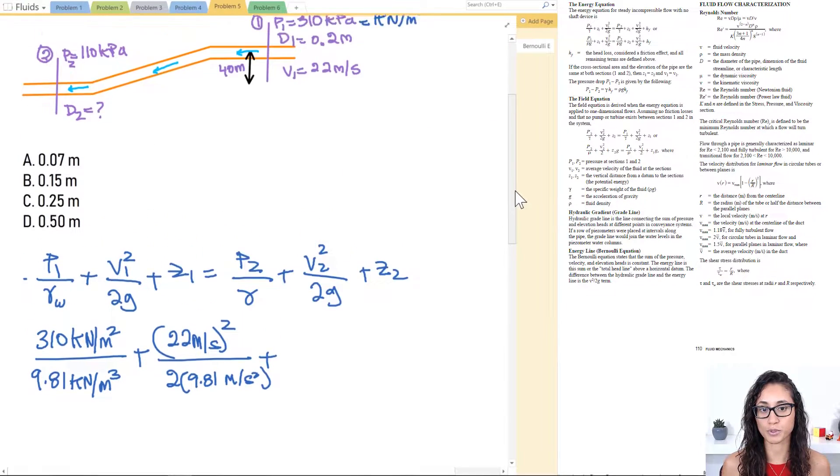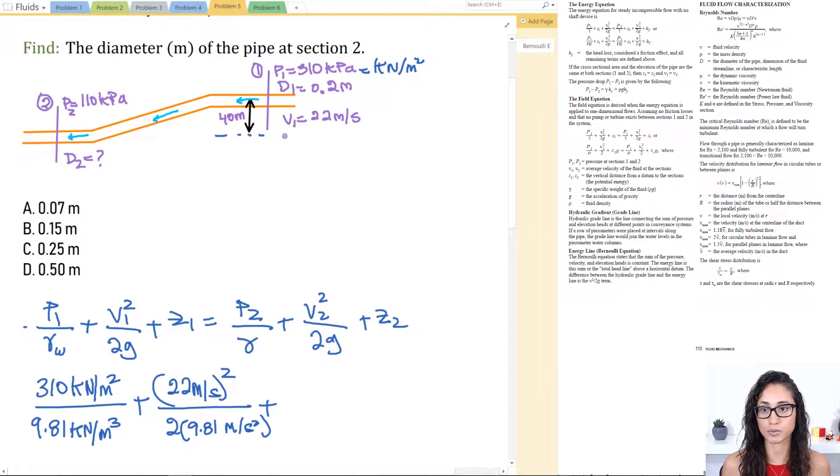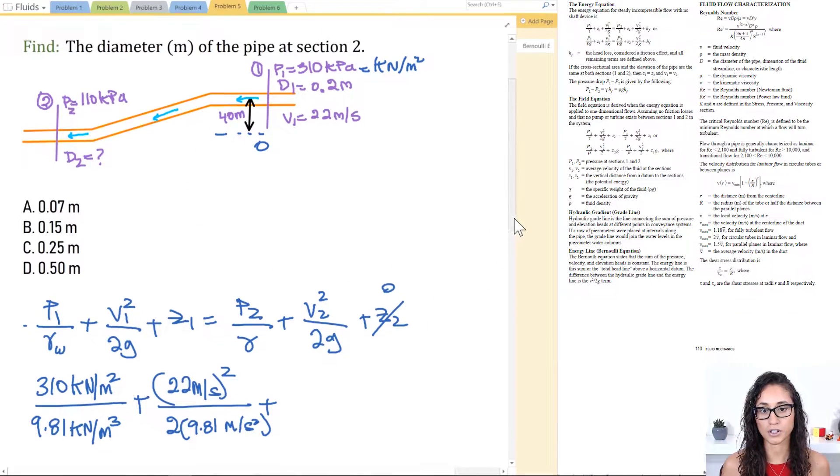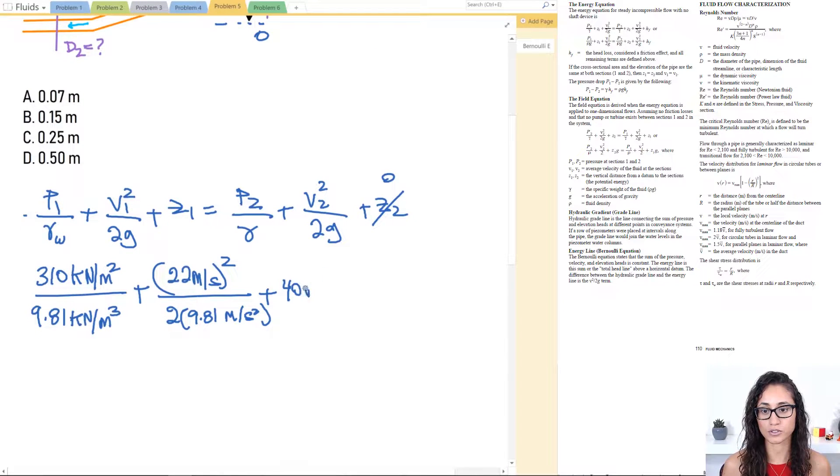We have 22 meters per second squared divided by 2 times 9.81 meters per second squared. For Z1, if we pick our datum to be here, this is your zero point, then Z1 is at the level 40 meters, but Z2 is going to be zero. So we do plus 40 meters. This equals 110 kilopascal divided by 9.81 kilonewtons per cubic meters plus V2 squared, we don't have that yet, divided by 2 times 9.81 meters per second squared.